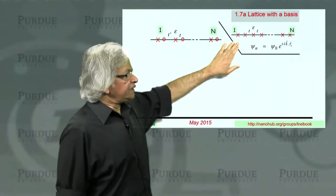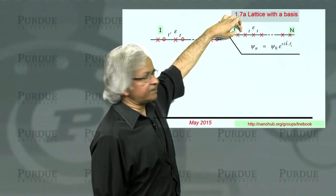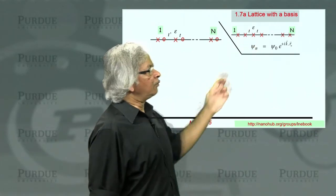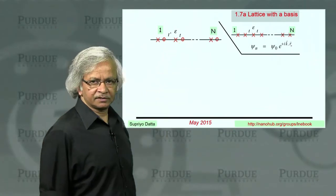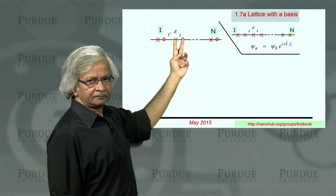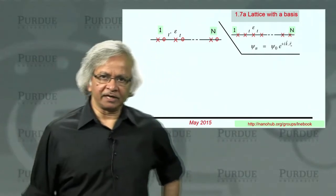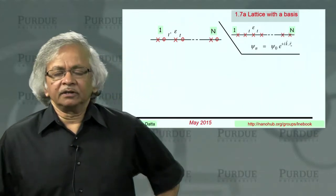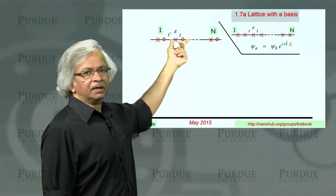What do we mean by that? In a one-dimensional example, what we had is x's representing the basis functions and it's periodic, so every unit cell has only one basis function. What we are going to consider now is something more general where a unit cell has two basis functions. For example, you could have a solid where there's an A atom and a B atom, and then again an A atom and a B atom, so that the unit cell has two atoms. Another possibility is the same atom but including an s orbital and a p orbital as your basis functions.